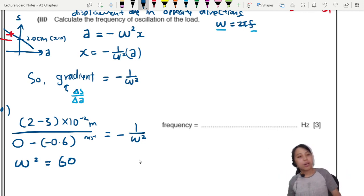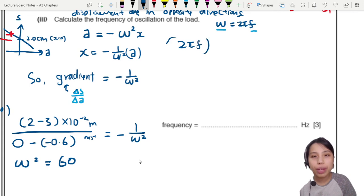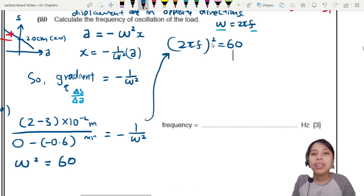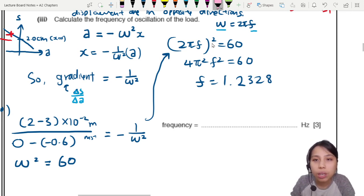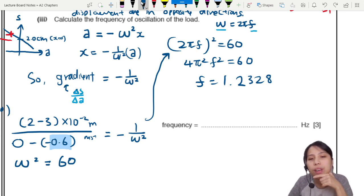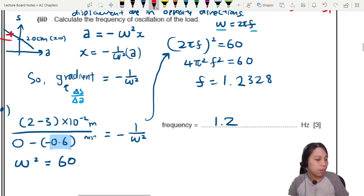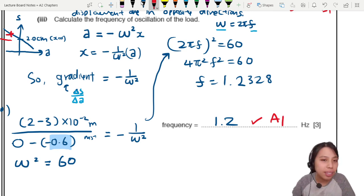Whatever value you choose, you should get omega square equals to 60. But we're not done yet. We need to find our frequency. So now we have 2πf square equals to 60, which I take from down here. And that will be 4π² f² equals to 60, giving me a frequency of 1.2328. So for the final answer, I can choose to follow the least significant figures of the values given to me. I want to stay with 2 significant figures. So this is 1.2 Hz.